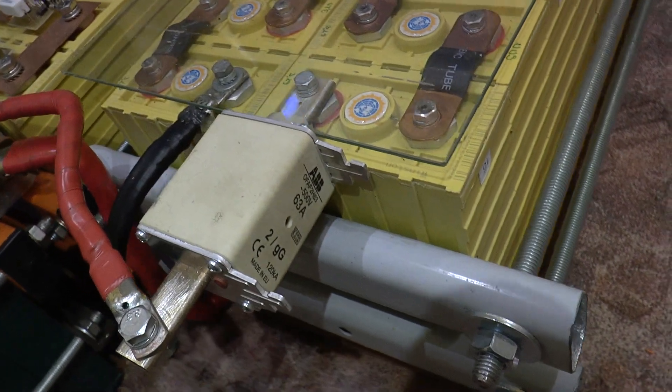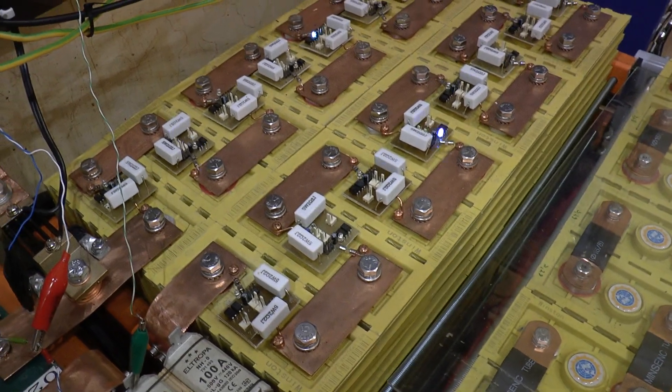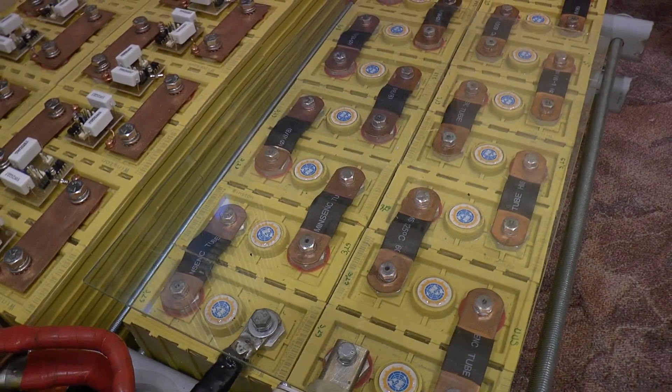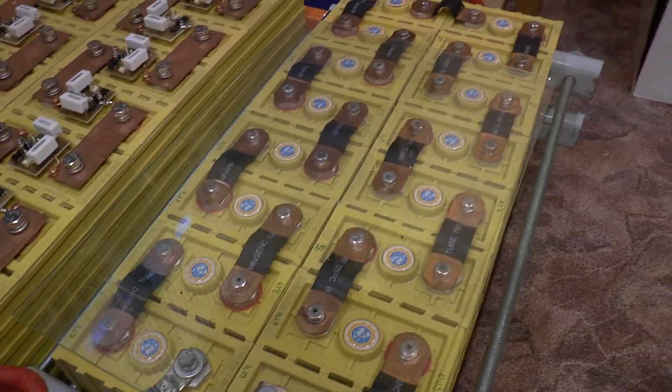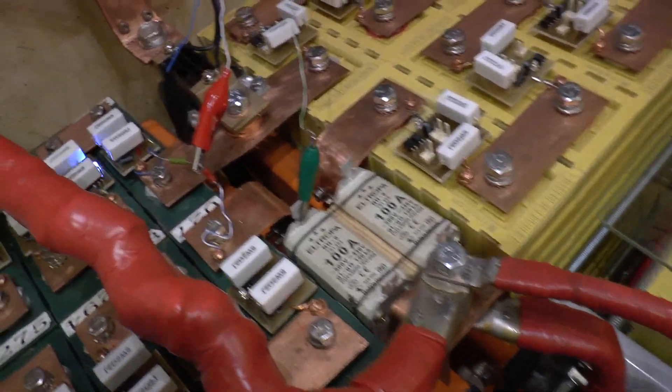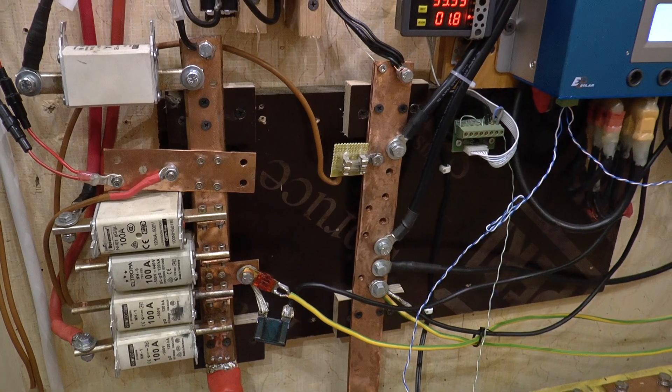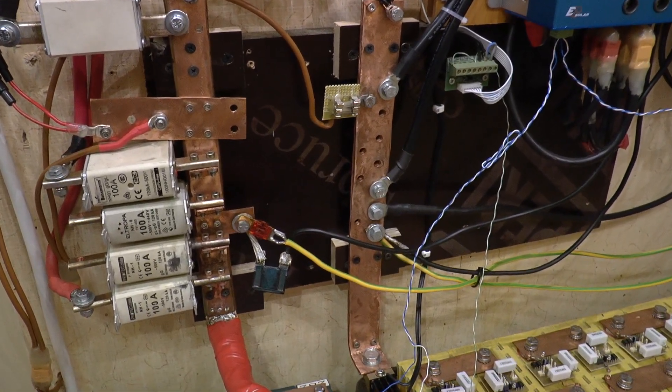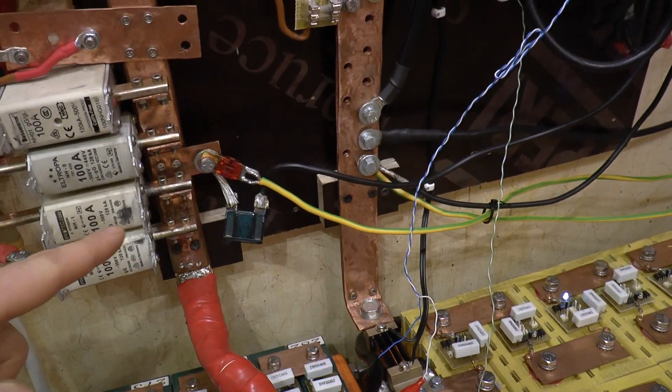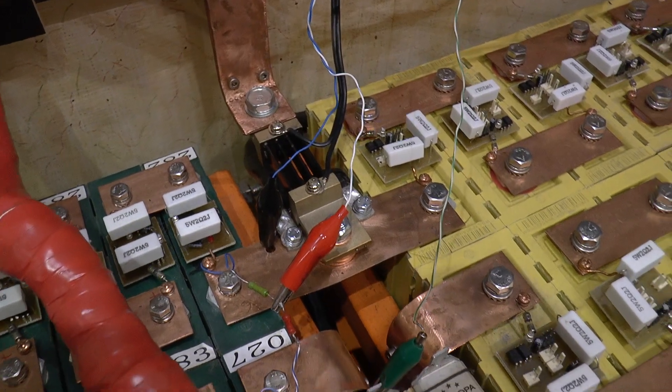This is also using 63 amp fuse. These BMSs I have to use here too. I have to make them for this pack too. And this is the terminals where I connect everything, this is minus terminal and plus terminal with the 400 amp shunt.